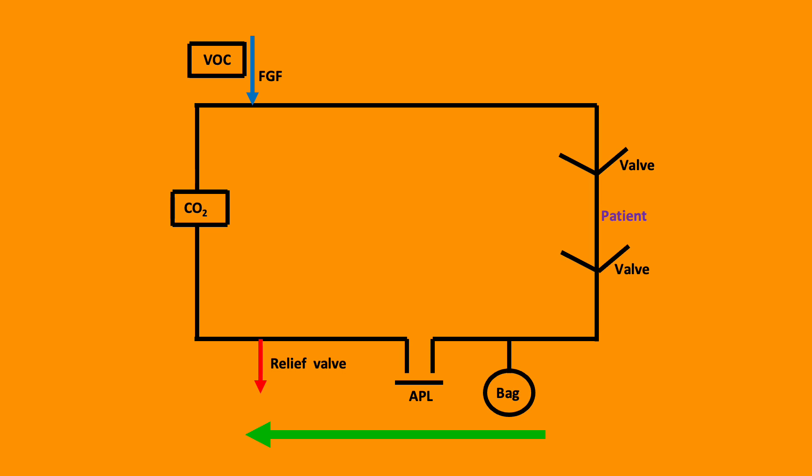If we look at the diagram, we have fresh gas flow input. The patient is positioned between two unidirectional valves. Following the patient, there's a bag to squeeze to allow observation and intermittent positive pressure ventilation in the APL valve, and a relief valve in the event the pressure within the system is too great, which can result in lung trauma. The CO2 removal agent will remove CO2 from the circuit to enable the use of low-flow anesthesia.